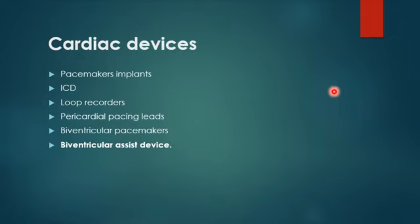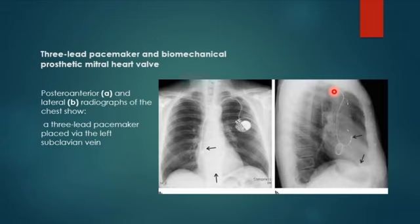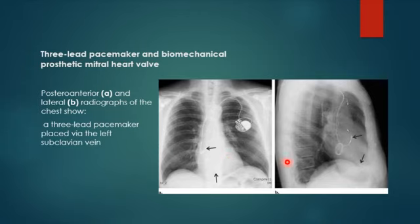There is another type called the biventricular pacemaker, and another device called the biventricular assist device, and loop recorders. Last time we discussed the pacemaker with only one or two leads for pacing the heart in the right atrium or right ventricle. This type is called a three-lead pacemaker or biventricular pacemaker. It consists of a lead passing through the left subclavian vein into the right atrium, another lead into the right ventricle, and another lead passing through the coronary draining vein into the left ventricle. This patient also has a prosthetic mitral valve.